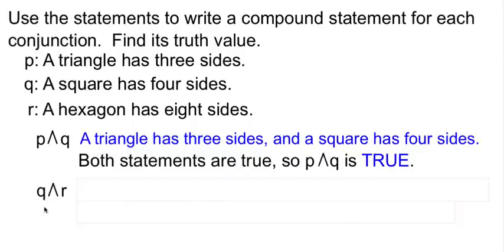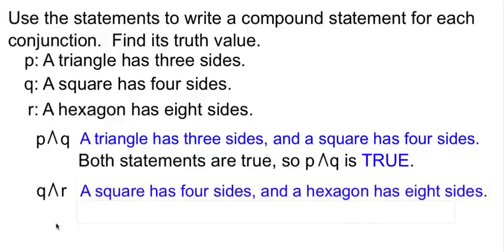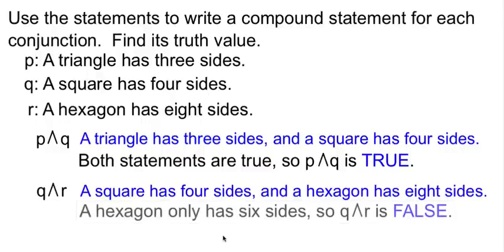Consider Q and R. Q, 'a square has four sides,' and R, 'a hexagon has eight sides.' That would be my conjunction statement. A square does indeed have four sides, that's true. A hexagon though doesn't have eight. A hexagon only has six sides, so my conjunction statement is false because both parts were not true.